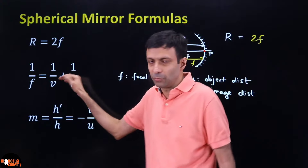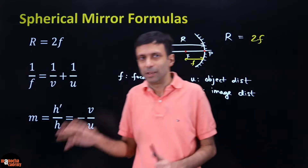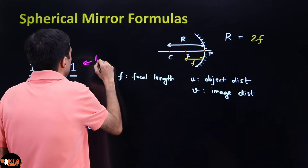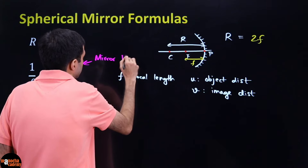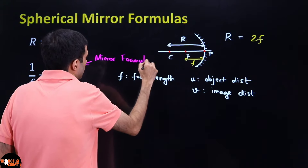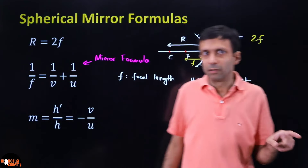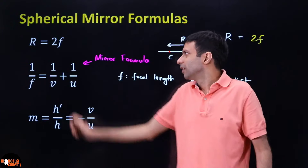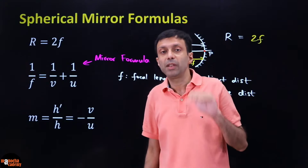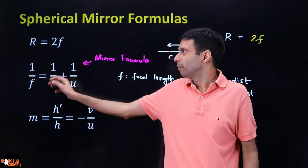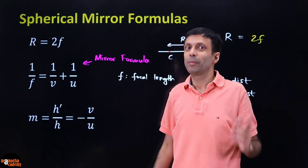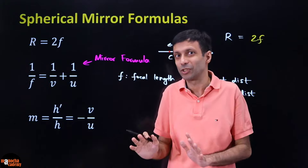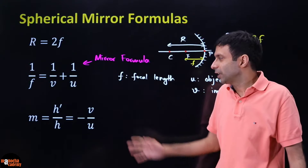This formula 1/f = 1/v + 1/u is called the mirror formula. When you do the lenses chapter, the lens formula will look very similar but there's one important difference - it becomes 1/f = 1/v minus 1/u. Please be very careful about the sign. Mirror formula uses plus, lens formula uses minus. Don't mix the two - always check whether you're doing a mirror or a lens question.